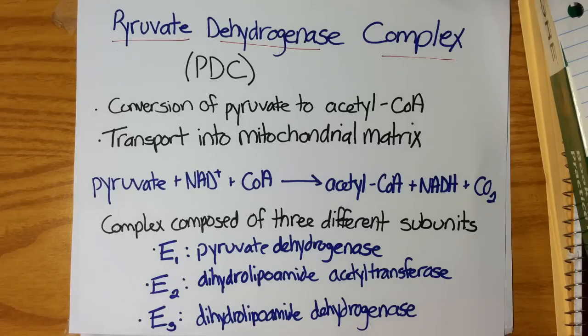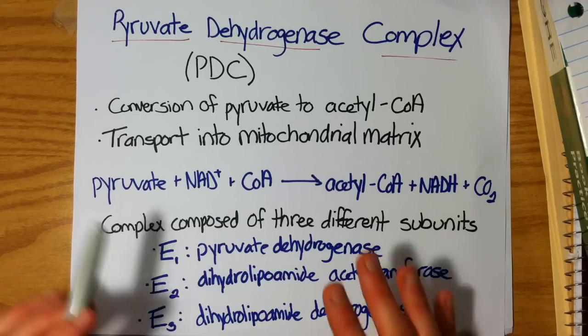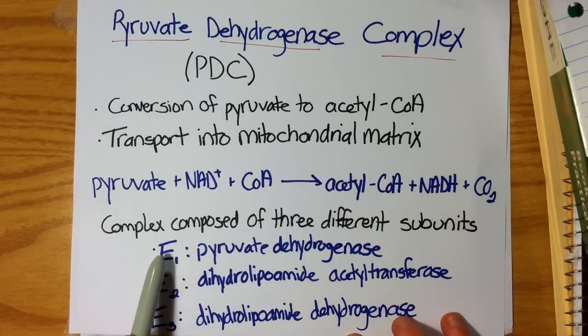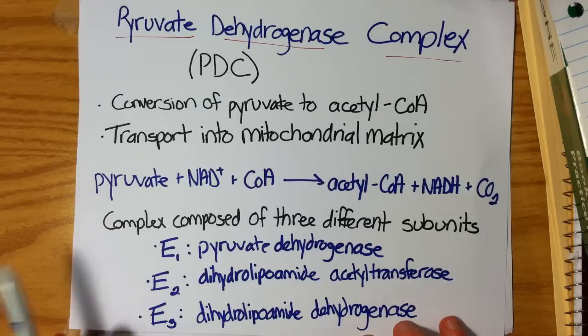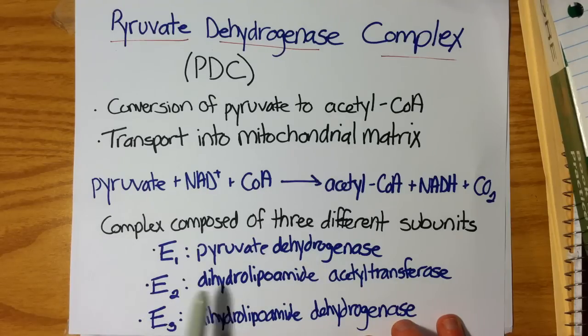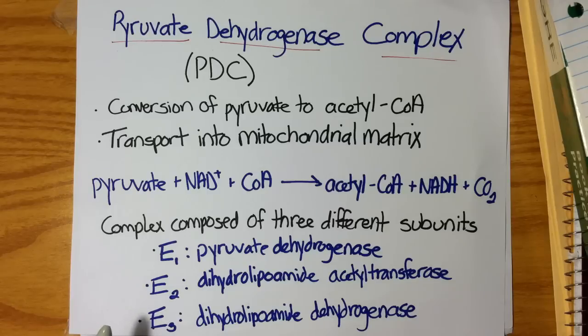The pyruvate dehydrogenase complex is a very unique enzyme. It's considered one enzyme, but it is a multimer of many, many subunits. It's composed of three main different types of subunits, commonly referred to as E1, E2, and E3. The first one is more specifically called pyruvate dehydrogenase.